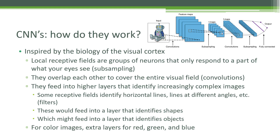CNNs are inspired by the biology of your visual cortex — they take cues from how your brain actually processes images from your retina. Individual groups of neurons service a specific part of your field of vision; we call these local receptive fields. They subsample the image coming in from your retinas and have specialized groups of neurons for processing specific parts of your visual field. These little areas overlap each other to cover your entire visual field, and this is called convolution — it's just a fancy word for breaking up data into little chunks, processing those chunks individually, and then assembling a bigger picture higher up in the chain.